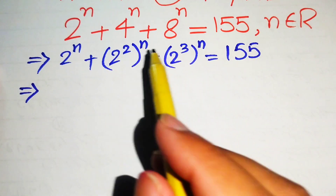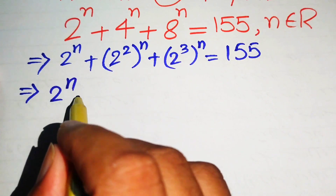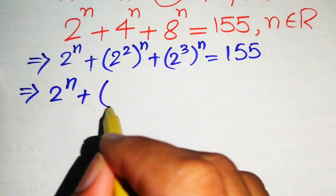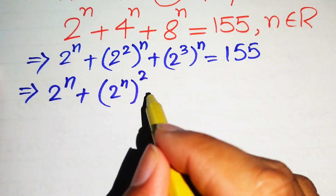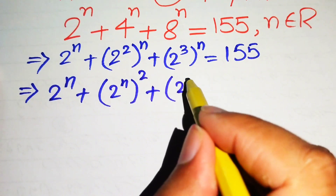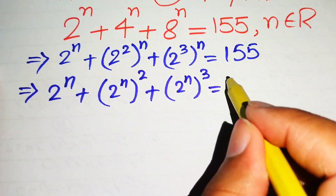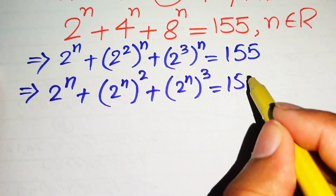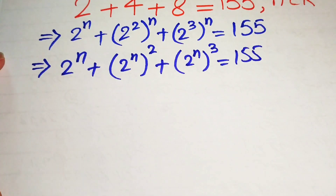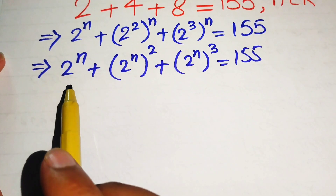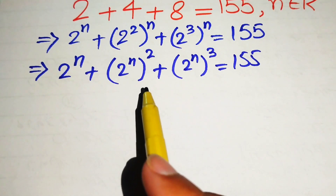In the next step, we use the exponential law. We interchange the two exponents and write it as 2 to the power of n, plus (2 to the power of n) squared, plus (2 to the power of n) cubed, equals 155.